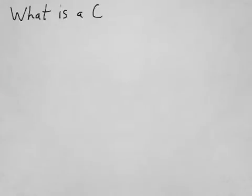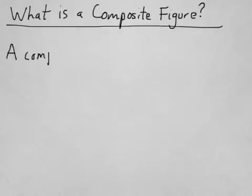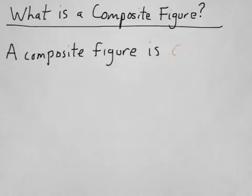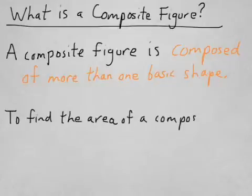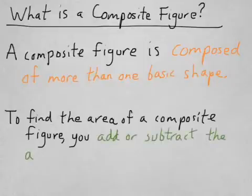So what is a composite figure anyway? A composite figure is composed of more than one basic shape. So you could have like a rectangle and a circle, you could have a trapezoid and a hexagon, any combination you want. And you find the area of a composite figure by adding or subtracting the individual areas of each of the component shapes.